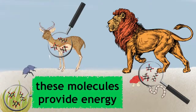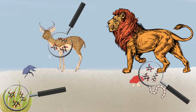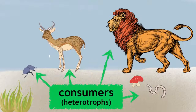These molecules provide energy for all living organisms in an ecosystem. All other organisms that do not photosynthesize are considered consumers or heterotrophs.